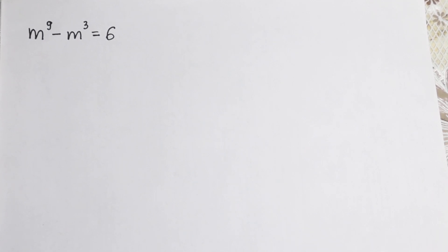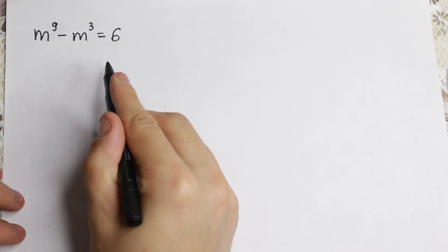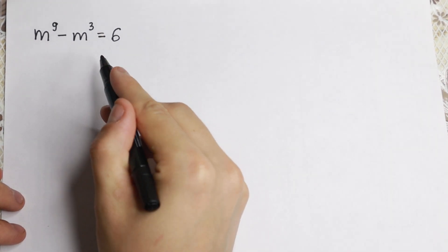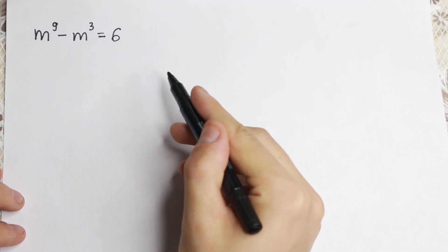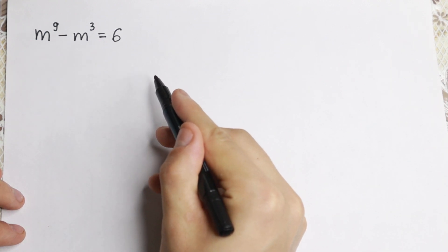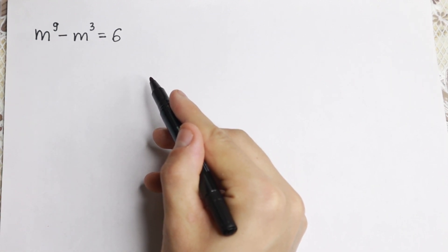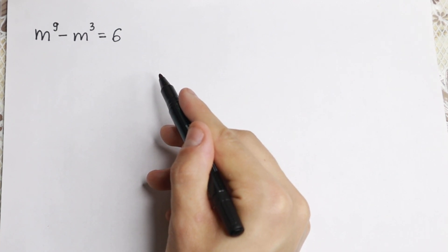Hello everyone! Happy to see you here — really interesting problem today. We have m to the 9th power minus m cube equal to 6, and we need to find m. As you can see, we have a 9th power equation, so it looks like we have no more than 9 roots. But in this video I'm going to show you how to find the real roots real quick.